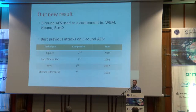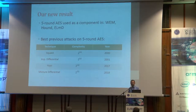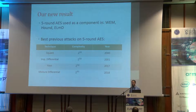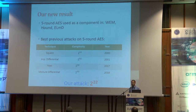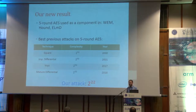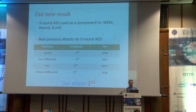Our new result presents a cryptanalytic attack on 5-round AES. Looking at previous attacks on 5-round AES, the complexity was 2^32 — actually there are 4 attacks with different techniques from different years, but all of them reached only the complexity of 2^32, and this record was not broken in the last 20 years. Our new result makes it 2^22 — that is, a thousand times speedup — to be presented at this crypto conference, using a technique of Grassi and some other techniques.